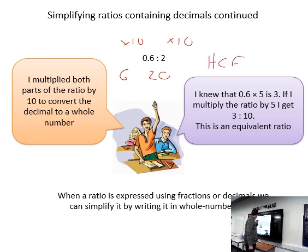The highest common factor of six and twenty is two, so let's divide by two both sides. This is three and this is ten. Three and ten, this is simplified because the highest common factor is one. Both sides are whole numbers, and the highest common factor between three and ten is one.